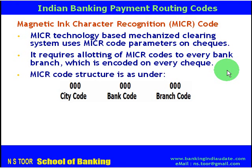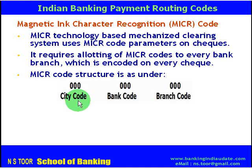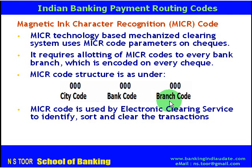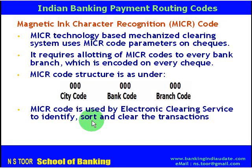The MICR code structure is like this: it has nine characters. The first three characters represent the city code. The next three characters represent the bank code. And the last three characters represent the branch code. MICR is used by electronic clearing services in India for the purpose of identification, sorting and clearing the transactions, and it has been in use for a number of years and has stabilized.